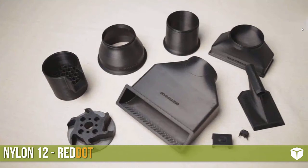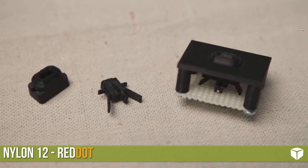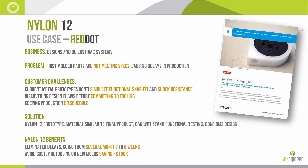We have a quick case study for Nylon 12 from a company called Red Dot — one of the beta users for Nylon 12. They're an HVAC company that creates a lot of complex parts. They have a nice functional impeller in a polycarbonate housing. On those Fortus-level machines with Nylon, we're able to print parts with very fine features — like these prototype buttons that snap fit together. That snap fit is an important aspect of Red Dot's designs.